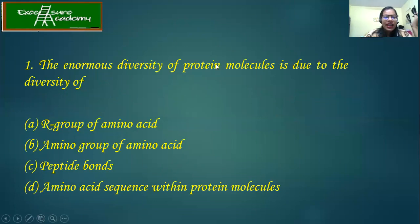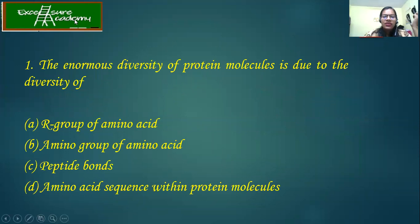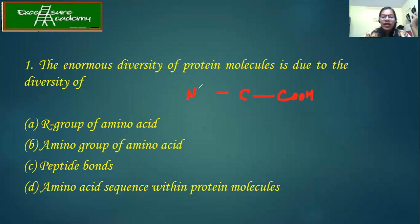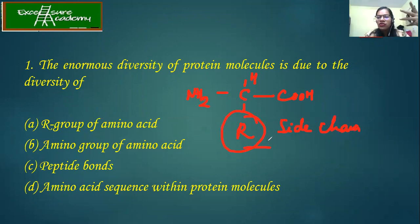The first question is: the enormous diversity of protein molecules is due to the diversity of what? As we have studied about all these amino acid structures, we see that everything is common — the COOH (acidic group), the amino group, and the H. What is varying is only the R group, the side chain. The more the difference in the side chain, the more difference you see in protein diversity.